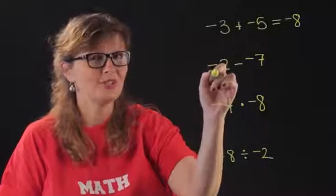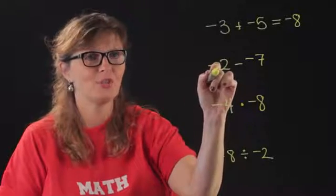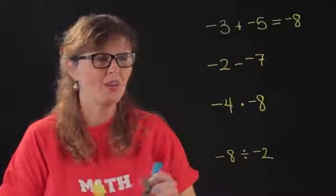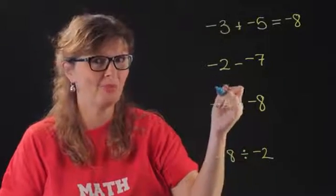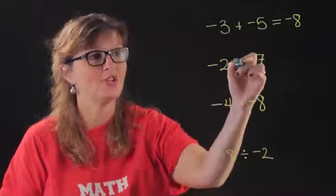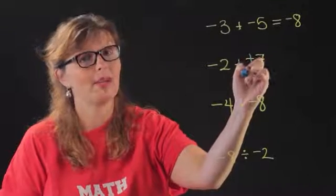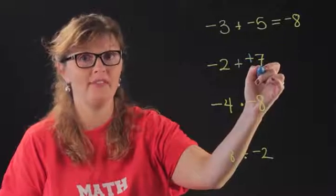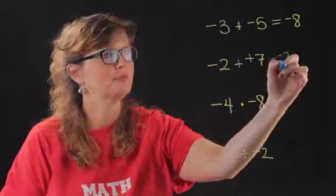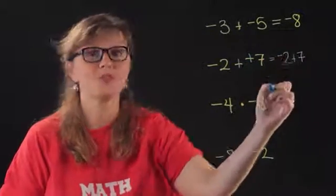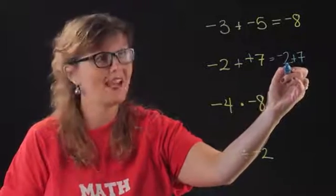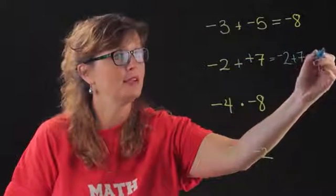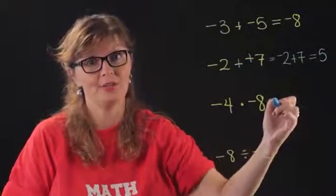This one's not so simple: negative two minus negative seven. We have to remember that in math world, two wrongs make a right — so two negatives make a positive. So now we have negative two plus seven. This is like saying: I borrowed two dollars from you and now I have seven dollars. After I pay you back, I still have five dollars.